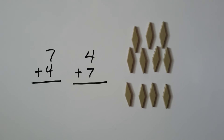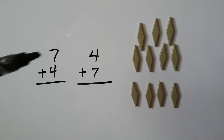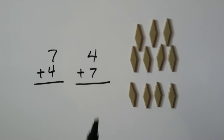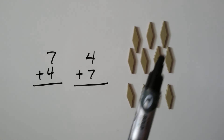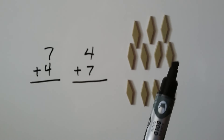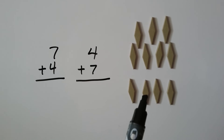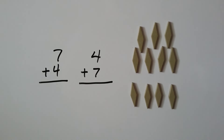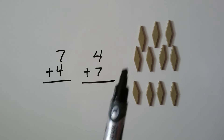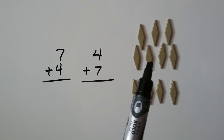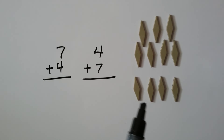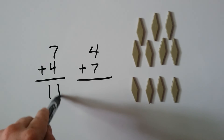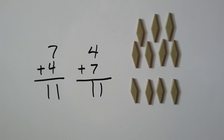How about this one? Can you help me with this one? We have seven plus four or four plus seven. We have seven and four — so how many do we have in all? Counting one through eleven. Seven plus four is eleven, and four plus seven is eleven. See?